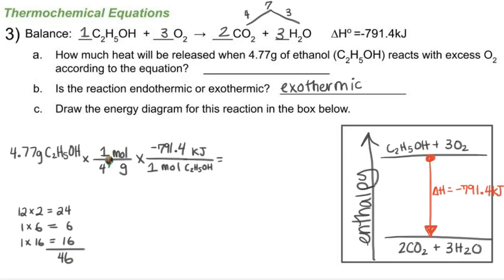Calculating: 4.77 divided by 46 times −791.4 gives −82.0647. Rounding to three significant figures gives −82.1 kilojoules. The negative sign indicates energy is being released. So our final answer is −82.1 kilojoules.